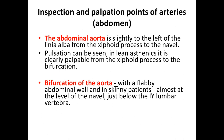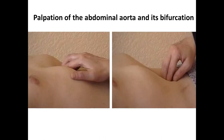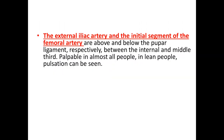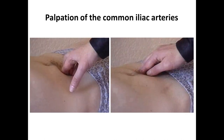The abdominal aorta is located slightly to the left of the linea alba, from the xiphoid process to the navel. Its bifurcation is palpable in patients with a flabby abdominal wall or in skinny patients, almost at the level of the navel, just below the fourth lumbar vertebra. The external iliac artery and initial segment of the femoral artery, below the inguinal ligament, between the internal and middle third, are palpable in almost all people.